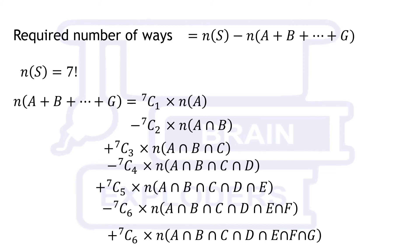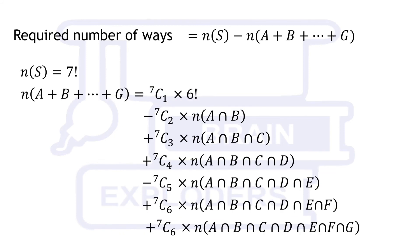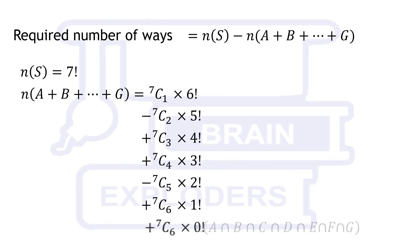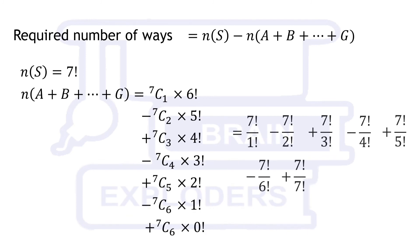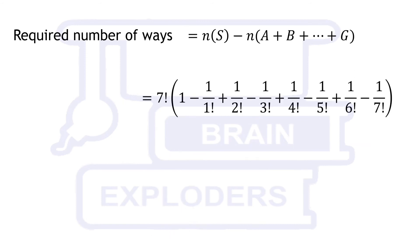Put these values in obtained equations. On further solving, we get required number of ways equal to 7 factorial times 1 minus 1 over 1 factorial plus 1 over 2 factorial minus 1 over 3 factorial and so on.